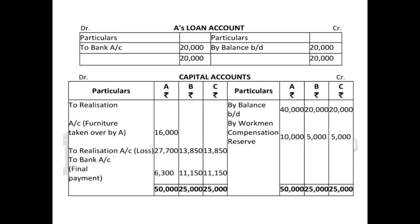Now A's loan account — the partner's loan account. On the credit side, we showed the opening balance since it is a liability: by balance brought down 20,000. Since no information was given whether it was paid, we assumed it was paid in full. On the debit side: to bank account, the entire loan amount of Rs. 20,000. This payment will also be shown on the credit side of the bank account since it reduces it.